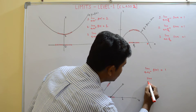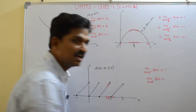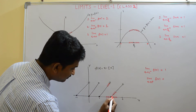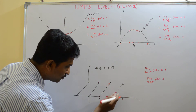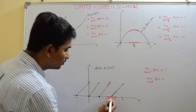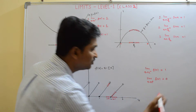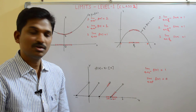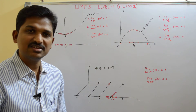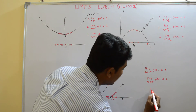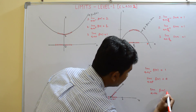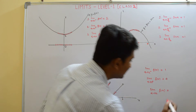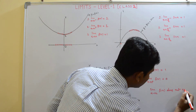Now the right hand limit: limit x approaches to 2 plus, f of x. As x approaches to 2 from the right, the functional value — the y value — is 0. So f of x approaches to 0. Left hand limit equals 1 and right hand limit equals 0, so left hand limit is not equal to right hand limit. Therefore we say the limit of this function does not exist.